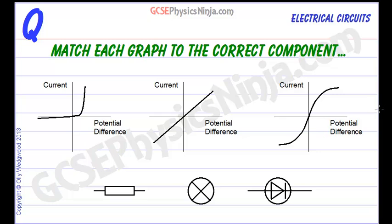Match each graph to the correct component. Let's start with the center one. We have a graph of current flowing through the component versus the potential difference applied across the component. Think of potential difference as the push force or the pressure which is trying to push the charge through.